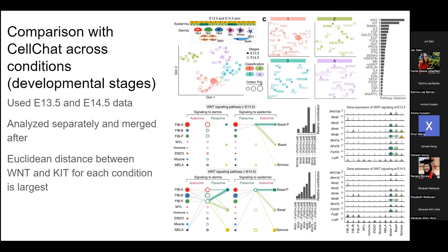CellPhoneDB does not have any built-in way to compare across conditions — something a lot of us need for healthy versus disease comparisons. That's obviously a very desirable thing to have, and CellChat does have this with a few built-in methods.